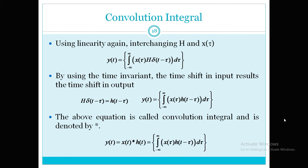The convolution integral is denoted by a star (*). So y(t) = x(t) * h(t) = integral from minus infinity to infinity of x(τ) h(t − τ) dτ. Here x(τ) is the input signal and h(t − τ) is the time-shifted impulse response of the continuous-time system.